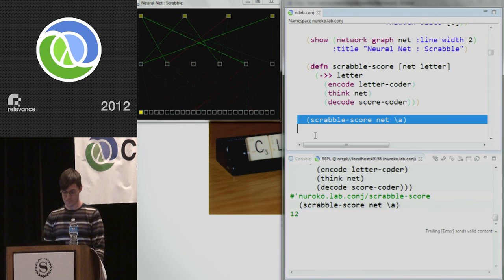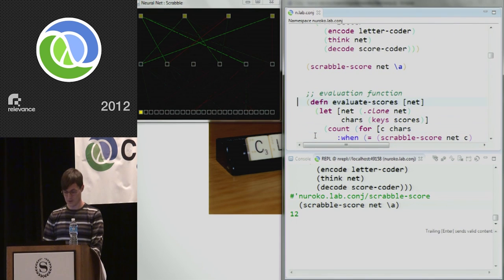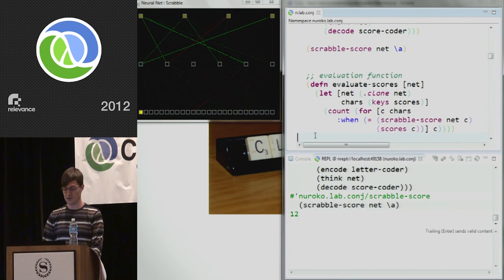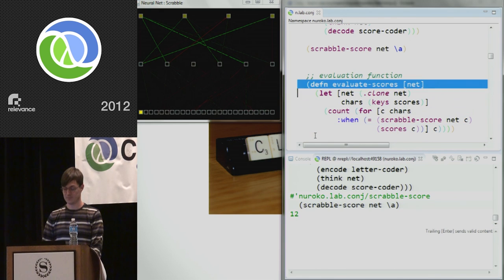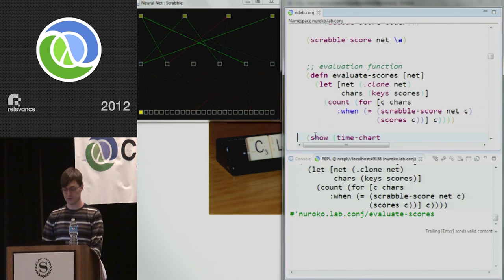So the function we're actually trying to produce here is going to take a letter. It's going to code it with the letter coder. It's going to run it through the neural network. Then it's going to decode it with our score coder to get the answer. And if I just try running that function with the letter A at the moment, I get 12. Now 12 is completely wrong. It shouldn't be 12. It should be 1. But that's because we haven't trained the neural network yet. It's just coming out with a random answer.